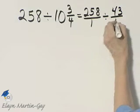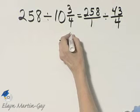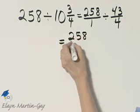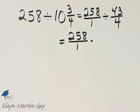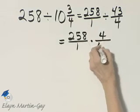That's 43 over the original denominator of 4. So this is 258 over 1 times the reciprocal of the second fraction, and the reciprocal is 4 over 43.